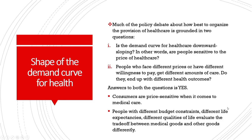Much of the policy debate about how best to organize healthcare provision is grounded in two questions. First, is the demand curve for healthcare downward sloping — are people sensitive to the price of healthcare? Second, do people with different willingness to pay end up with different health outcomes? Various studies have shown the answer to both is yes: consumers are price sensitive when it comes to medical care, and there is a trade-off experienced between medical goods and other goods.